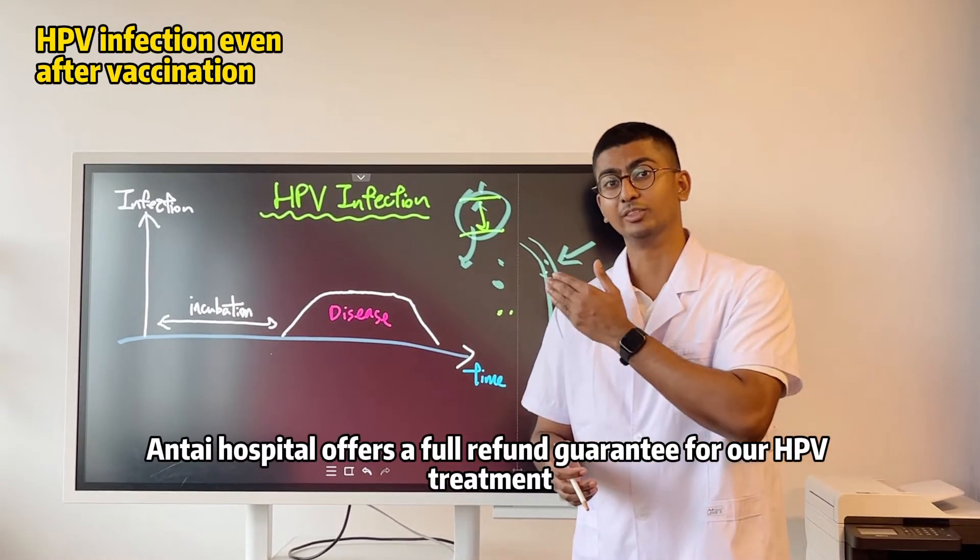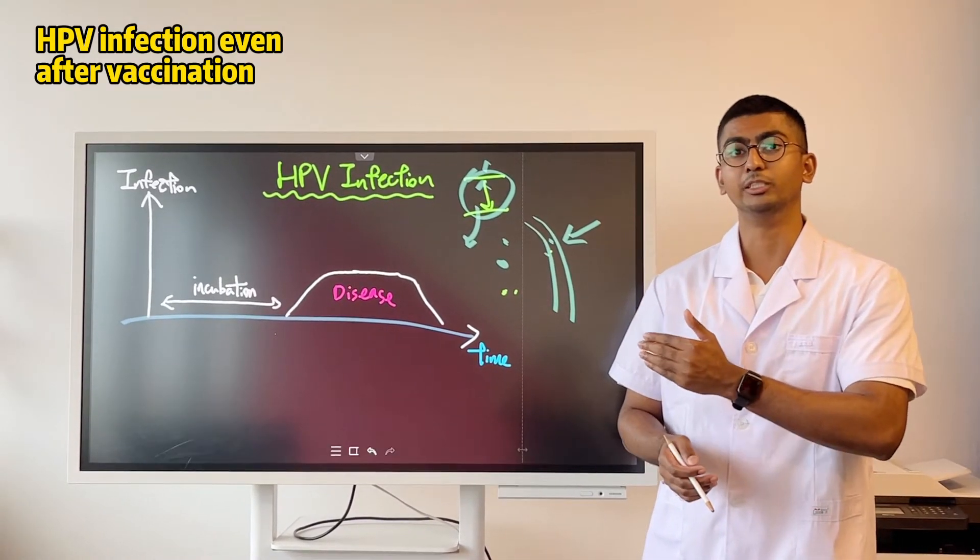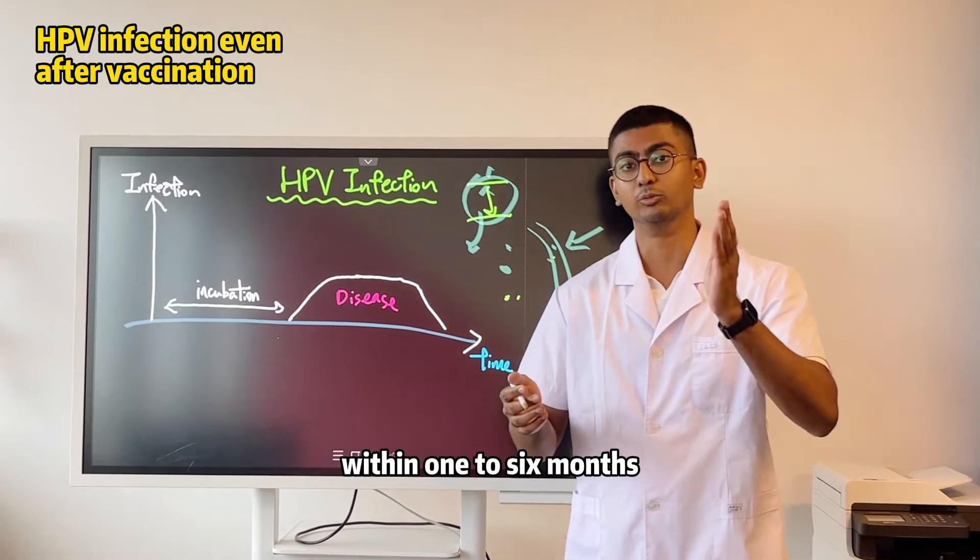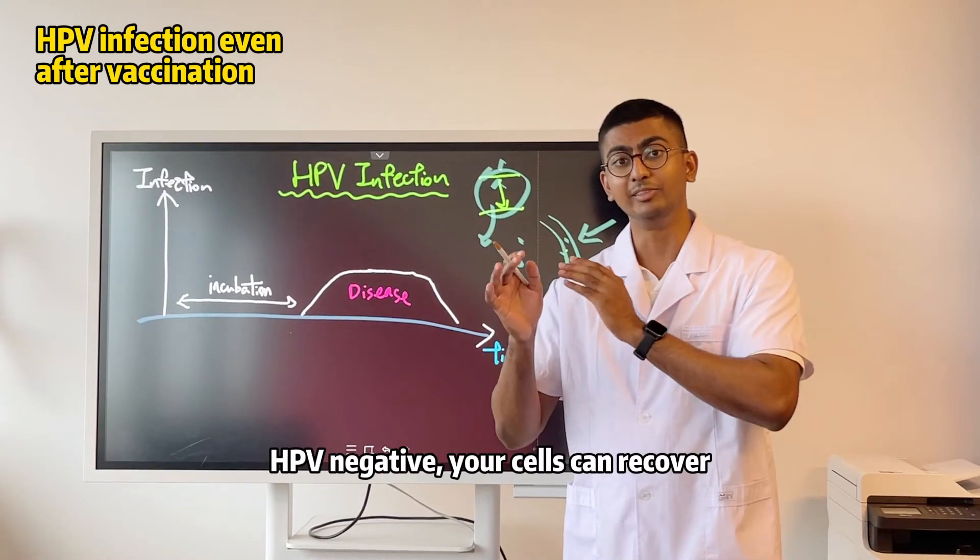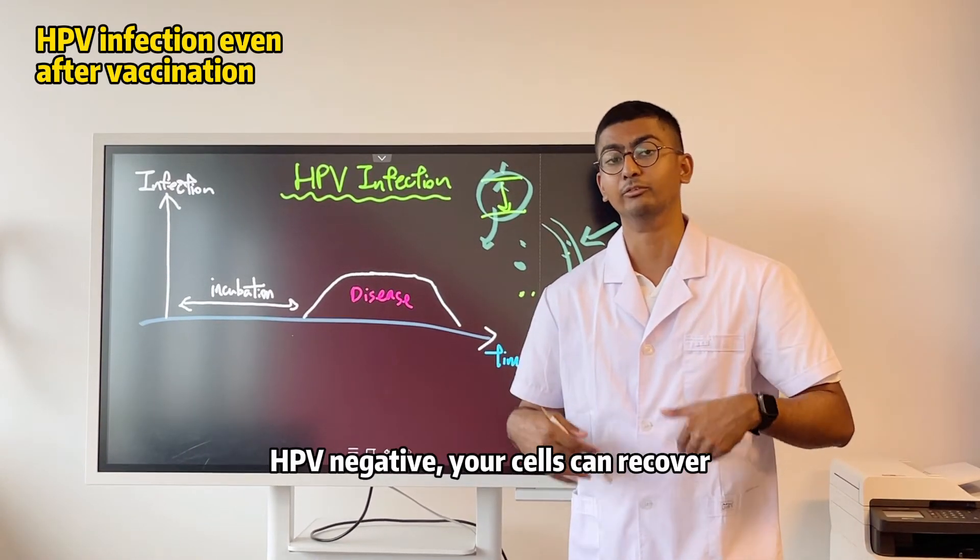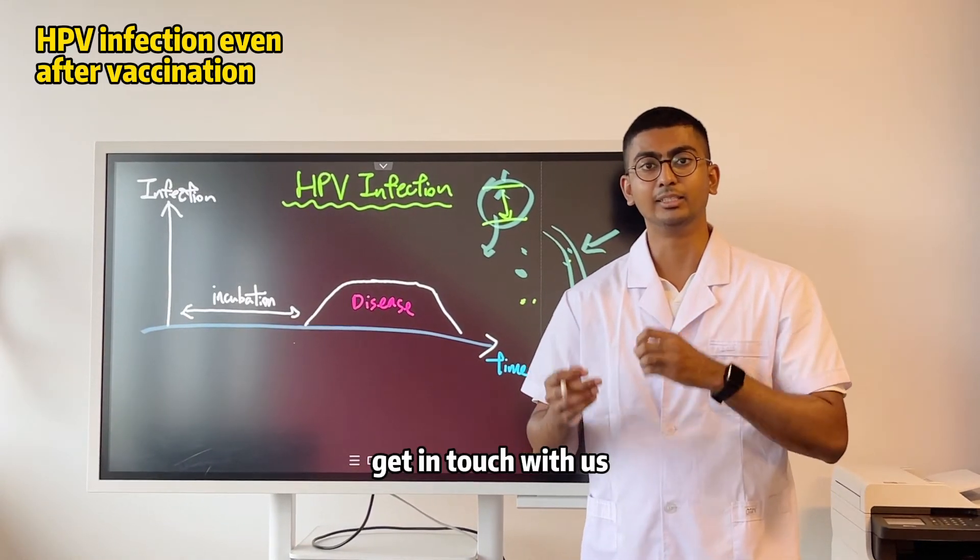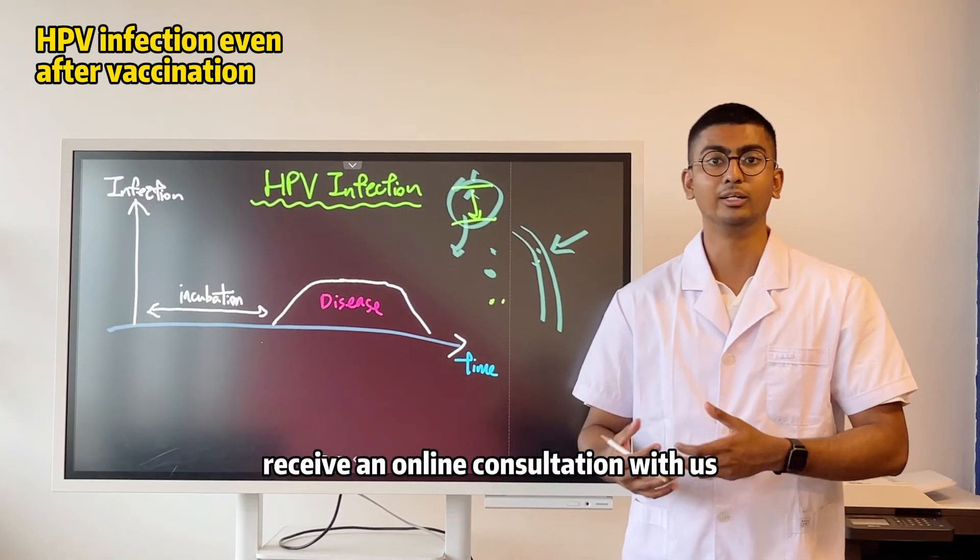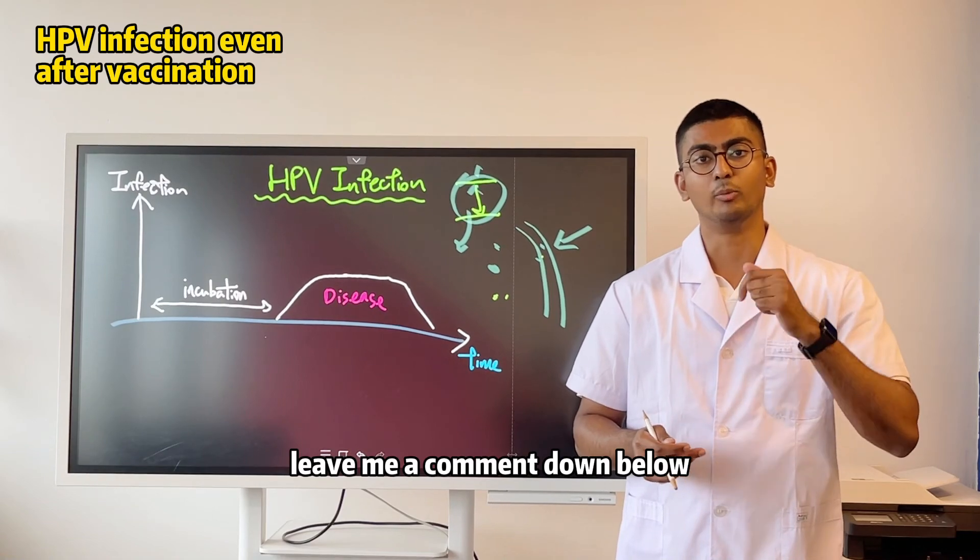Anti-Hospitalia offers a full refund guarantee for our HPV treatment. If you receive our treatment, within one to six months, you will turn your HPV positive into an HPV negative. Your cells can recover, and your symptoms will subside. Get in touch with us if you'd like to receive this treatment, receive an online consultation with us. And also, do visit our website and leave me a comment down below.